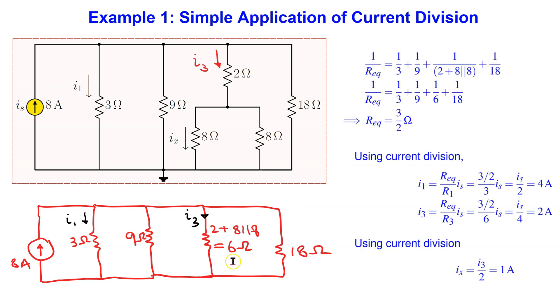We can find the equivalent resistance of these four resistors in parallel as shown. Then using current division, we can find I1 and I3 as shown.